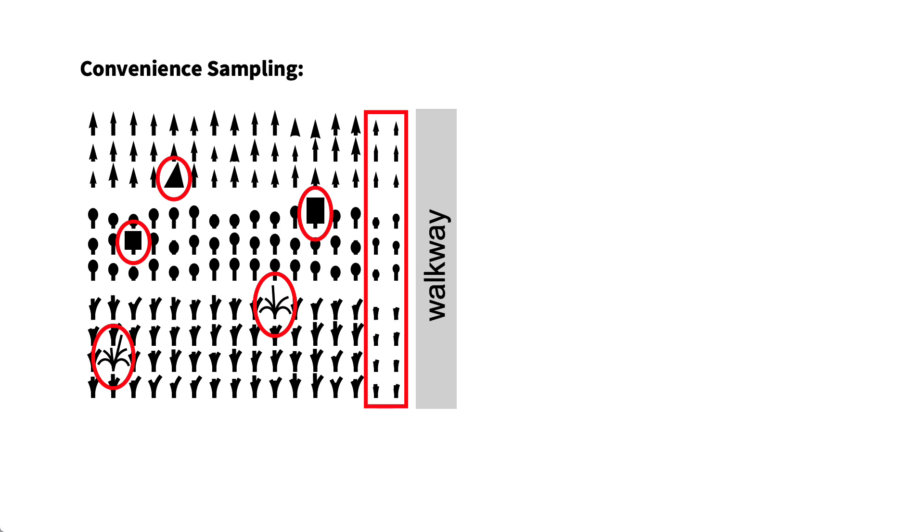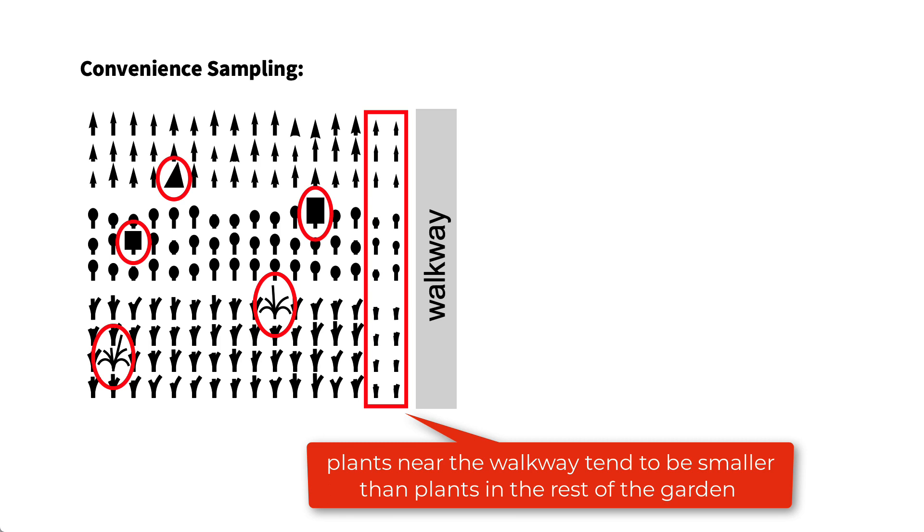The resulting samples are likely to be biased because plants near the walkway or plants that for some subjective reason tend to attract attention may not be typical of plants in the rest of the garden. In this diagram for example, the plants near the walkway tend to be smaller plants.